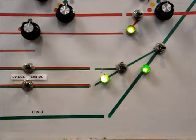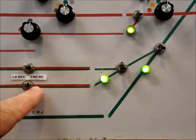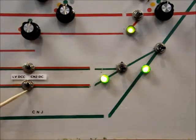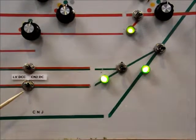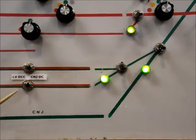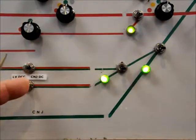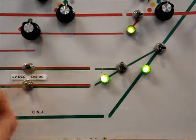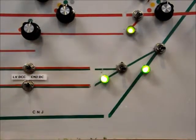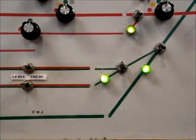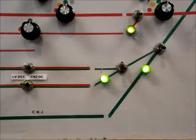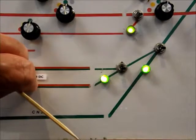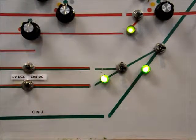The other thing that's unique is that the interchange track itself is controlled here and it is set up for either DC on the CNJ side, a center off position, and DCC on the left or the Lehigh Valley side. They also should be left in the center off position.